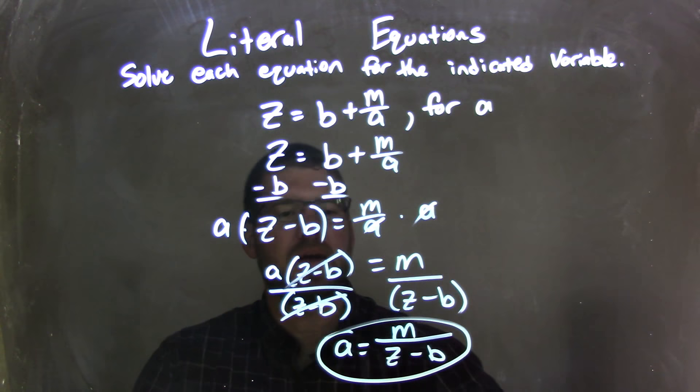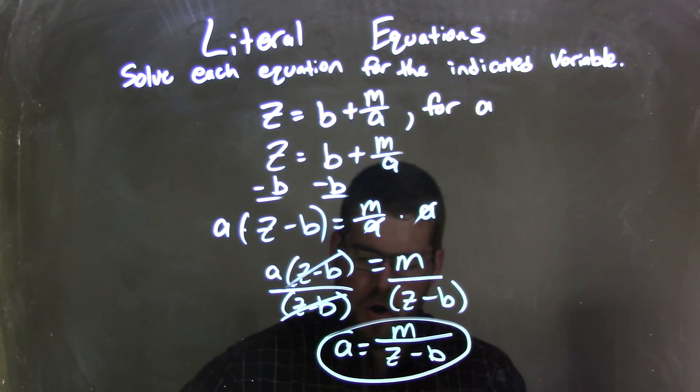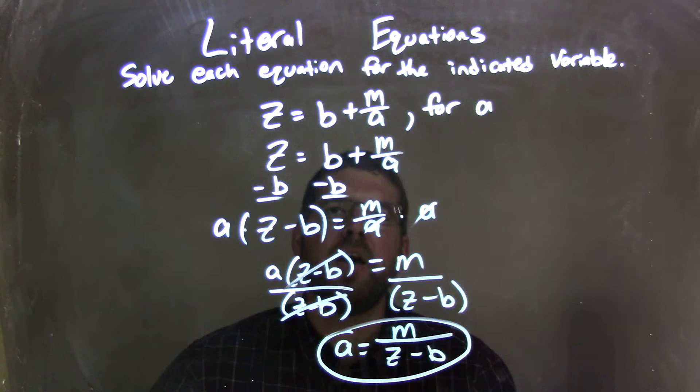We have a by itself, and it's isolated, and it's equal to m over z minus b. So let's recap.